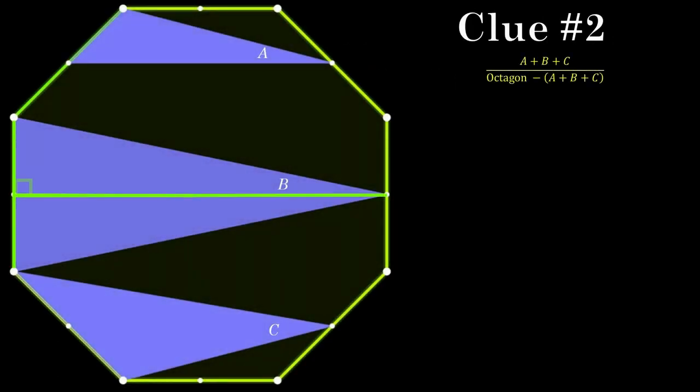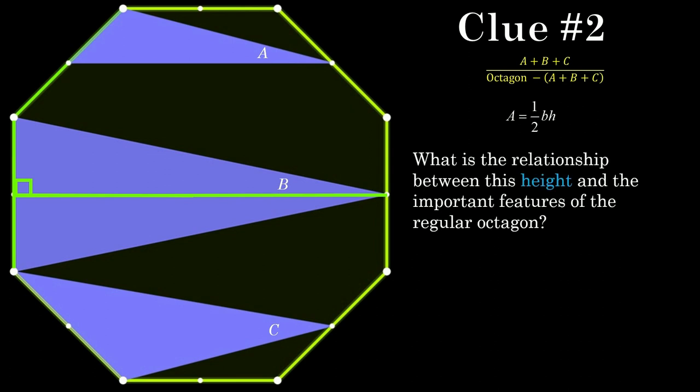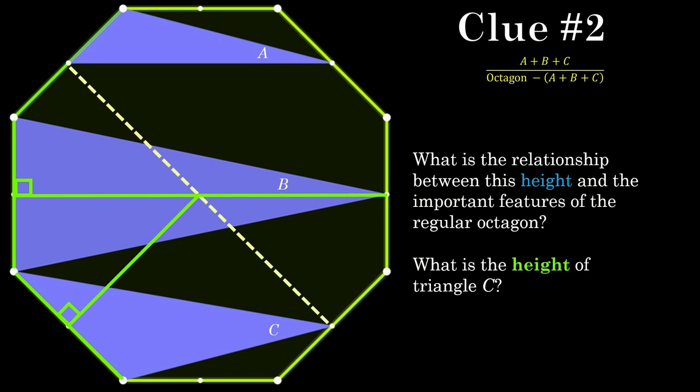All right. So clue number two, check this out. We've got triangle B and its height is different than the height of the others. In fact, triangle B's got a height that's really related, very closely related to perhaps the most important part of a polygon. Now the height of triangle C you can see right here is going to be that distance right there. So what's the relationship between that important distance? It has a name and the height of triangle B. Hopefully those will get you started on those two triangles right there.